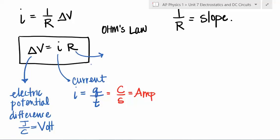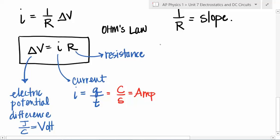We plug in our computers, hair dryers, and televisions so we can transfer energy from electric energy to light energy, sound energy, and thermal energy. Every time you look at your phone, the battery's potential difference is drained a little bit because energy is converted. Resistance is like that friction, and it's measured in volts per amp.